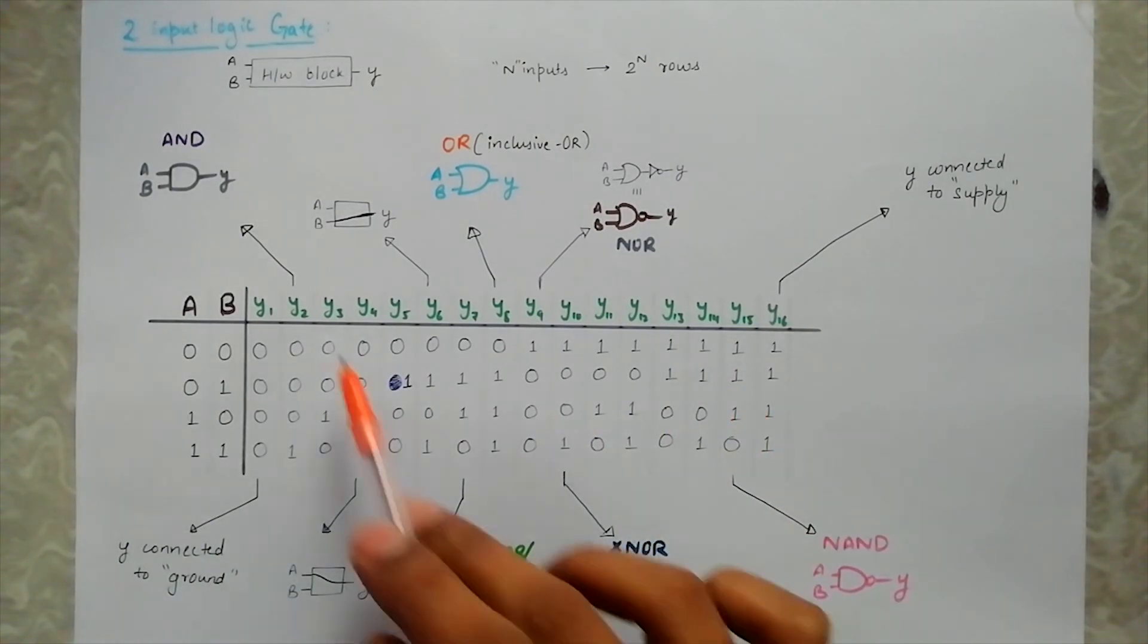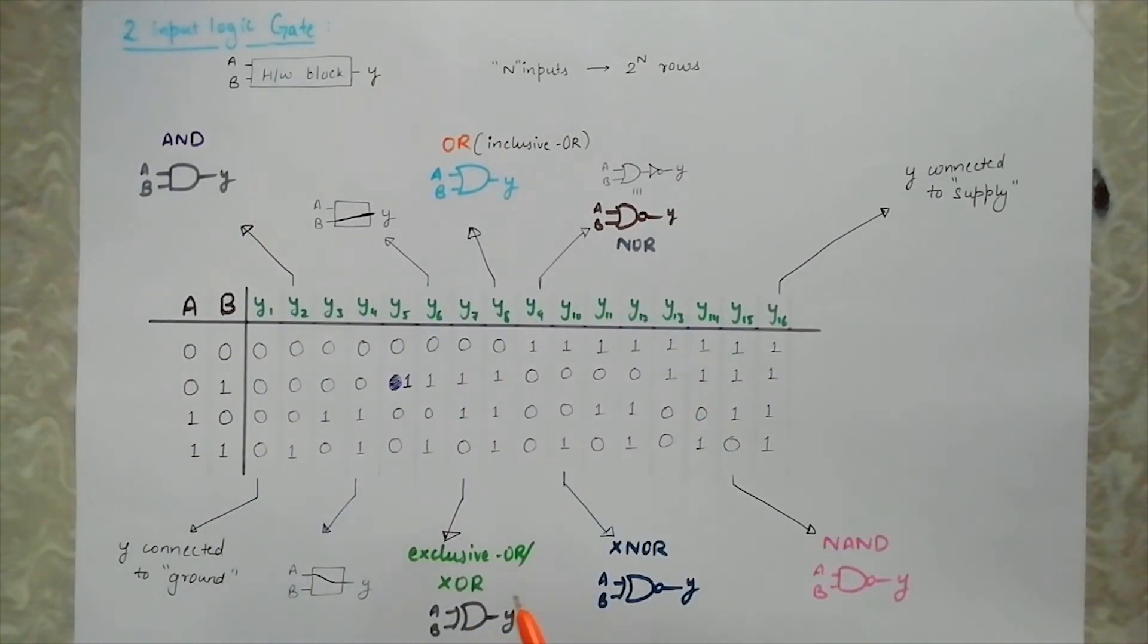The gates discussed here - AND, OR, EXOR, NAND, NOR, EXNOR - can have more than 2 inputs. Like for a 3 input AND to be 1, all the 3 inputs should be 1.